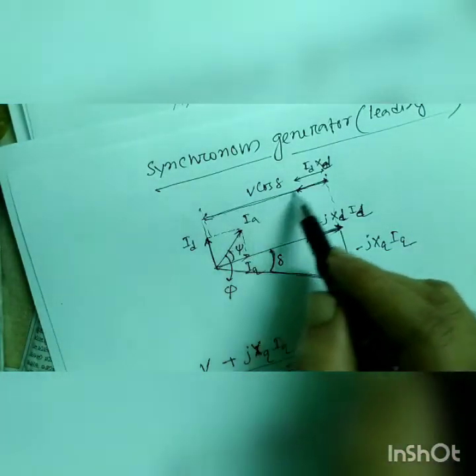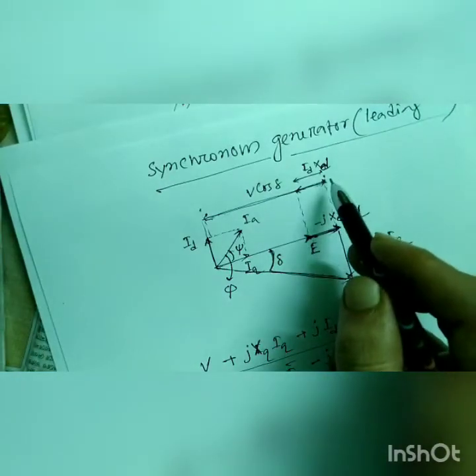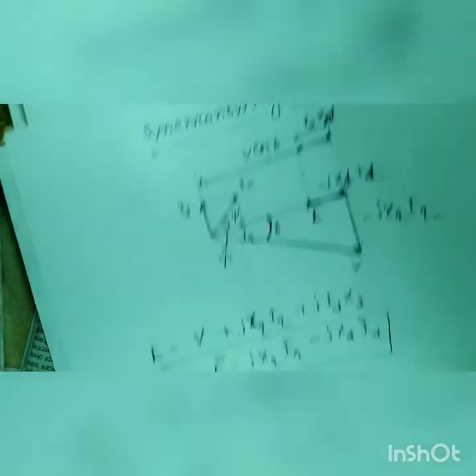So this length will be v cos delta, total length minus idxd. Is it fine?